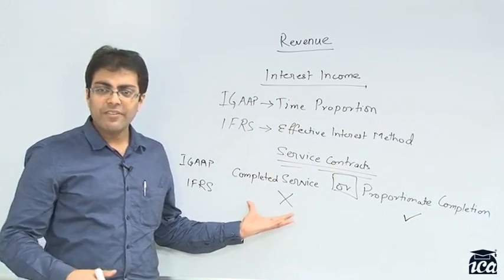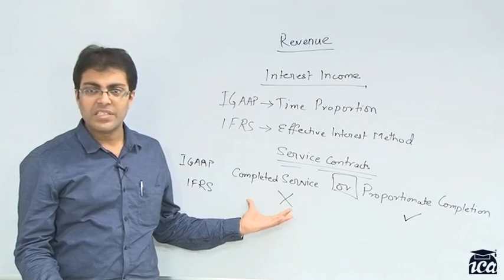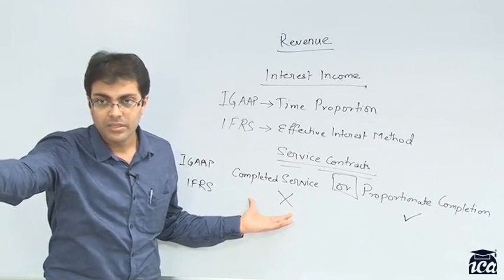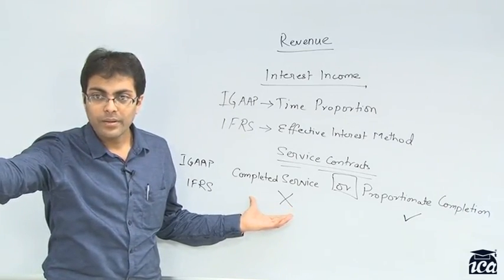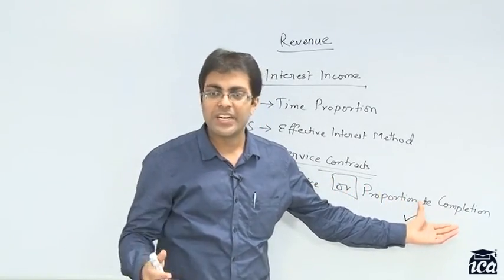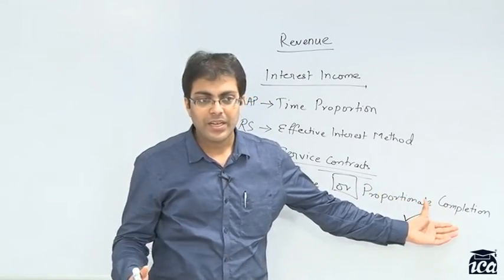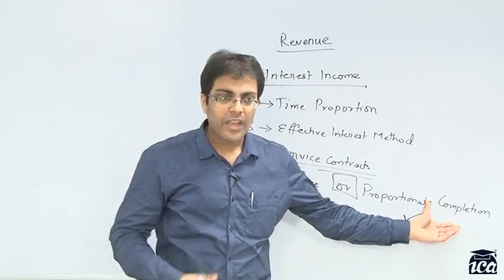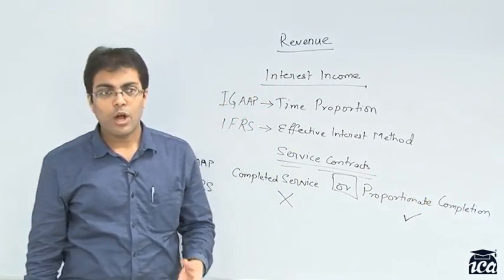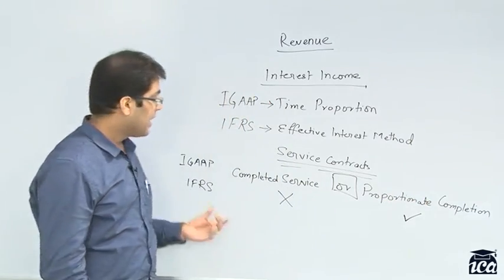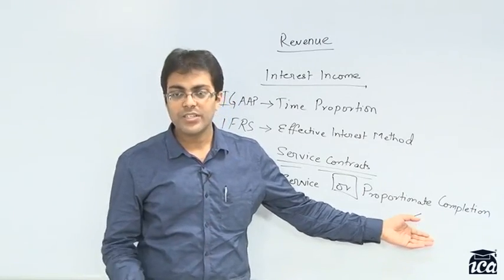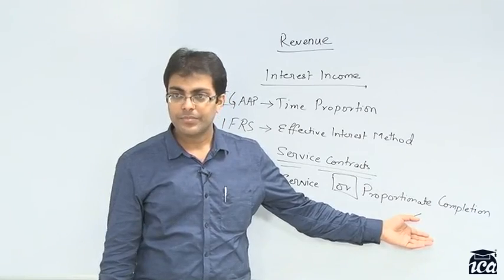However, the IFRS does not allow this. It is the same as the fair value principle of IFRS which says that you should follow the percentage of completion method which is similar to proportionate completion method. Understand if you are getting into a service agreement for three years, the Indian GAAP would allow you to recognize revenues at the end of the third year. But at the proportionate completion method, it says in the first year what is the percentage of service which has been complete. If it is twenty percent, recognize twenty percent. So this gives a much better picture of the revenues for a business. And accordingly IFRS prescribes proportionate completion method which is also known as percentage of completed contract method.